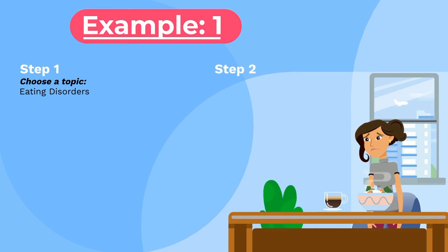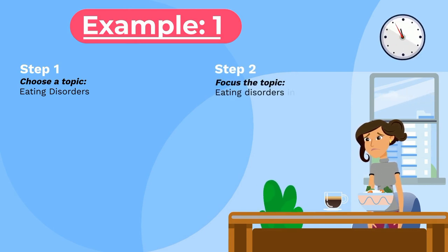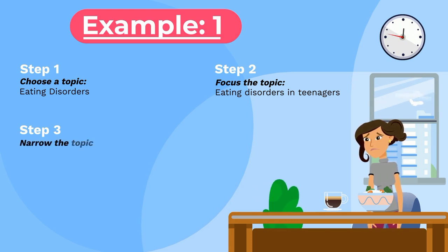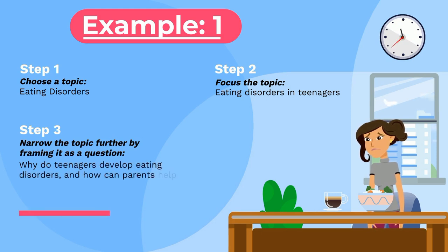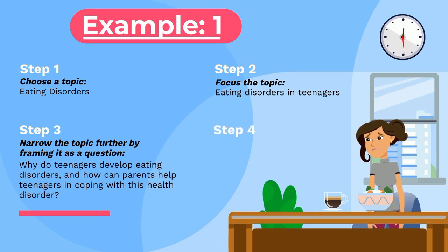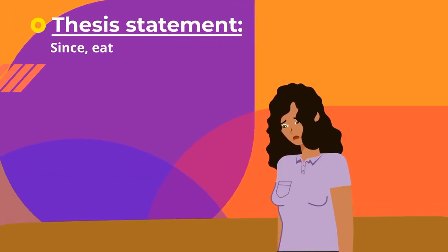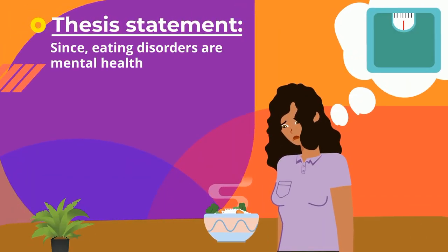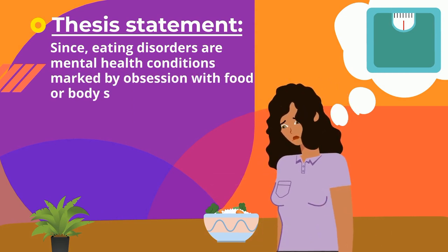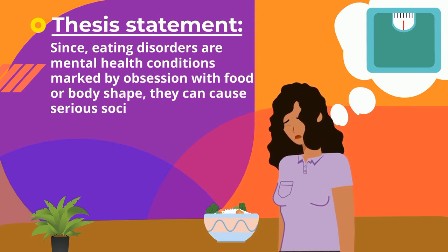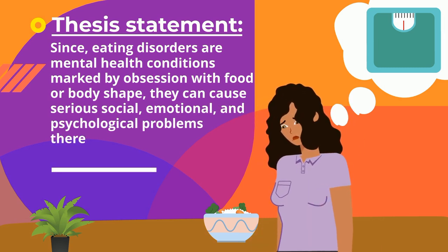Example one: Step one, choose a topic — eating disorders. Step two, focus the topic — eating disorders in teenagers. Step three, narrow the topic further by framing it as a question: why do teenagers develop eating disorders and how can parents help teenagers in coping with this health disorder? Step four, answer the question. Thesis: since eating disorders are mental health conditions marked by obsession with food or body shape, they can cause serious social, emotional, and psychological problems; therefore, parents must provide family support.